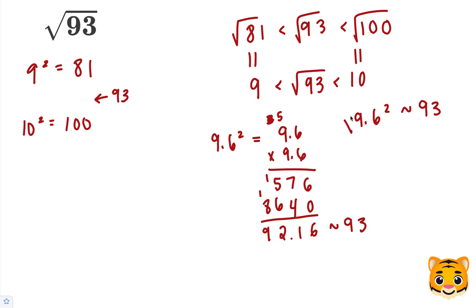Now that we know this, we can take the square root of both sides, and in this case the square root and the squared for the 9.6 cancel, and we get 9.6 is approximately the square root of 93. This will be our estimation. Thank you.